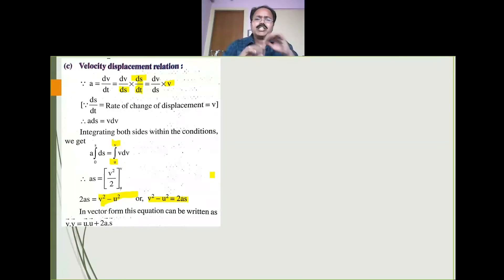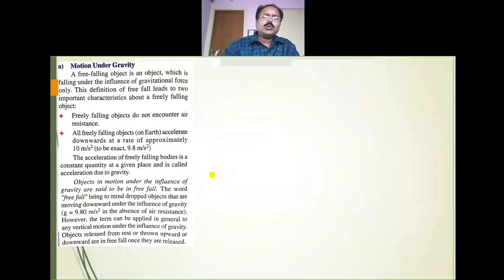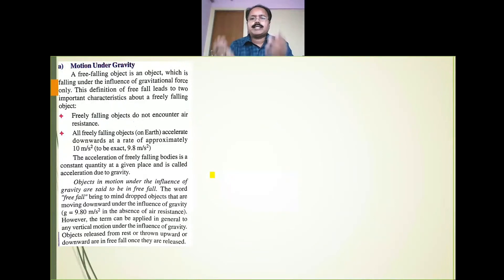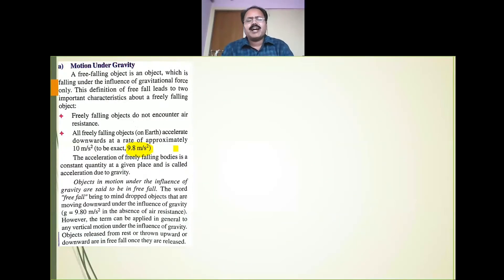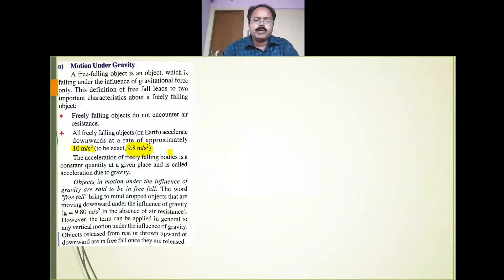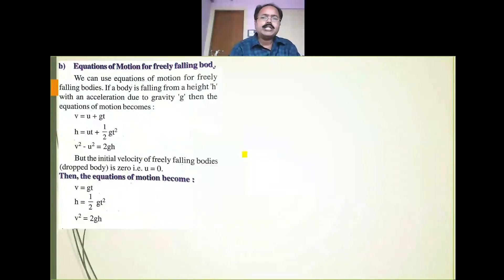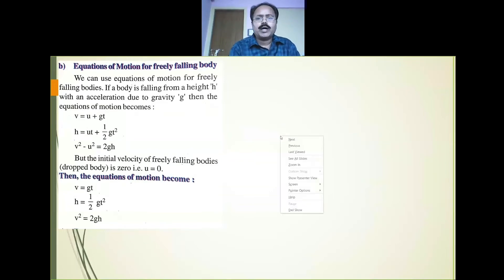What are the applications of these equations? There are two applications: when the body is falling freely under gravity, and when the body is projected vertically upwards. For a freely falling body, the acceleration is the acceleration due to gravity, g, equal to 9.8 metres per second square. For simplicity, if a value is not given, you can also take 10 metres per second square.